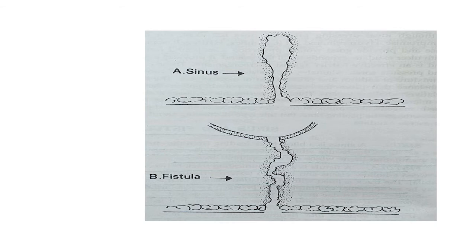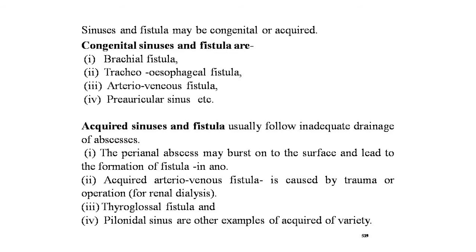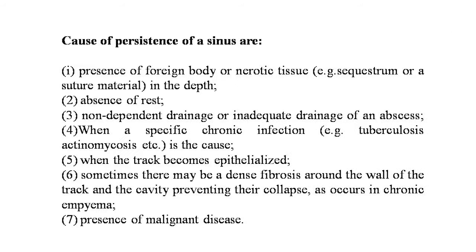Sinuses and fistulas may be congenital or acquired. Congenital examples include branchial fistula, tracheoesophageal fistula, arteriovenous fistula, and preauricular sinuses. Acquired sinuses and fistulas usually follow inadequate drainage of abscesses — a perianal abscess may burst onto the surface or lead to fistula-in-ano. Acquired arteriovenous fistula is caused by trauma or created surgically for renal dialysis. Thyroglossal fistula and pilonidal sinus are other acquired examples. Causes of sinus persistence include: foreign body or necrotic tissue (sequestrum, suture material), lack of rest or non-dependent drainage, specific chronic infection such as tuberculosis, epithelialization of the track, dense fibrosis preventing collapse (as in chronic empyema), and presence of malignant disease.